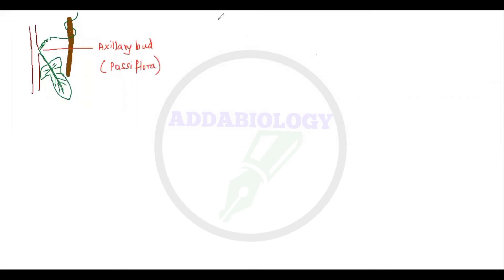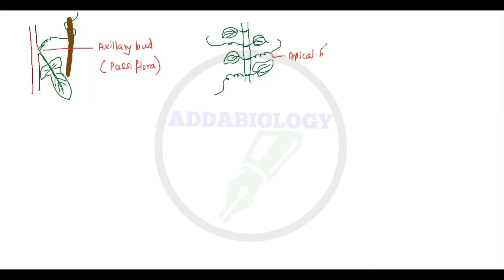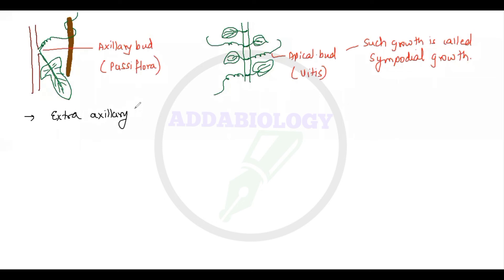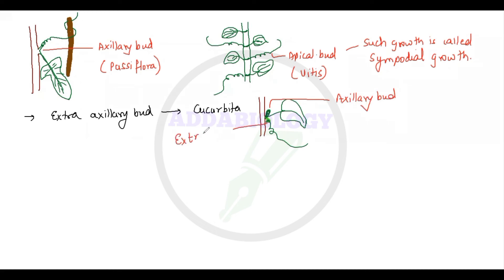One example of axillary bud modifying into a tendril is seen in Passiflora. In another type, tendrils are formed from the apical bud — seen in Vitis, where such growth is called sympodial growth because the tendril pulls the stem toward itself. Sometimes the extra-axillary bud modifies into a tendril, and the example for this is Cucurbita, where apart from the axillary bud there is an extra-axillary bud that modifies into a tendril.